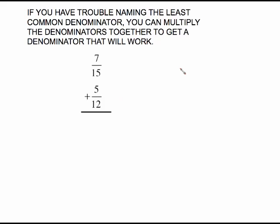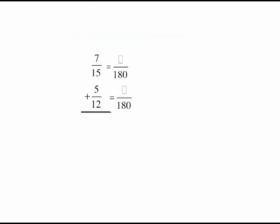If you have trouble naming the least common denominator, you can multiply the two denominators together and you will get a denominator that will work. It might not be the absolute least, but that's okay. So if you look at something like 15 and 12 and you don't want to go through a big hassle to figure out the least common denominator, just multiply those together. 15 times 12. 15 times 12 is 180. So that is a common denominator. It is not the least, but that's okay. I can use 180.